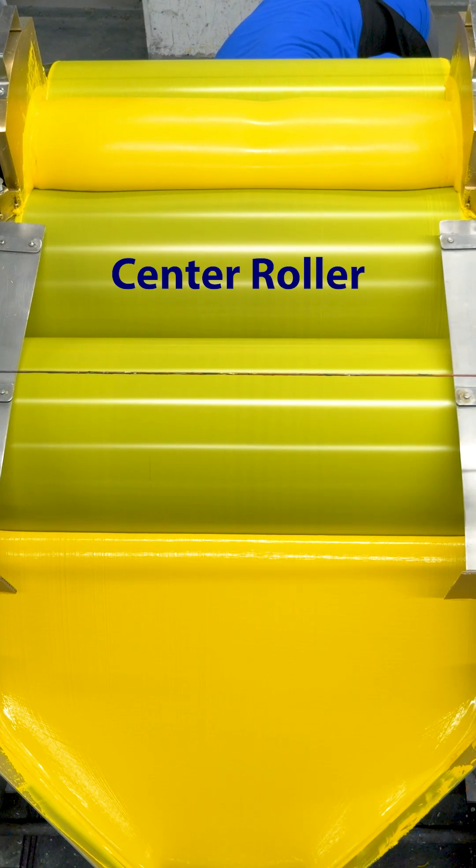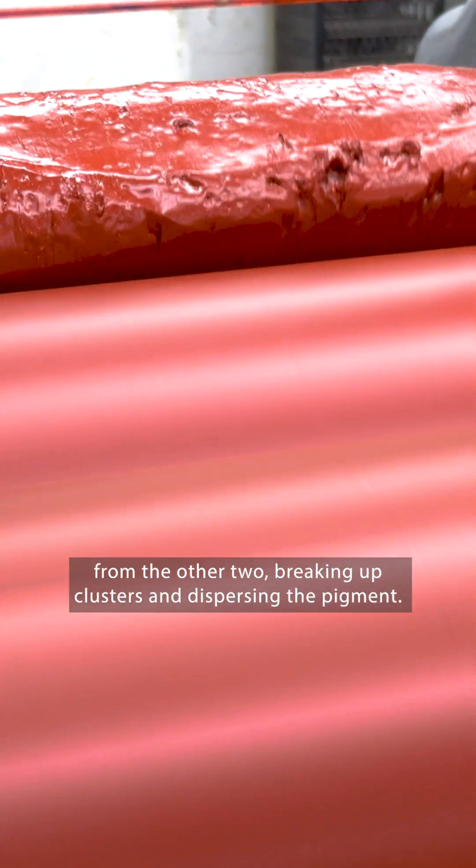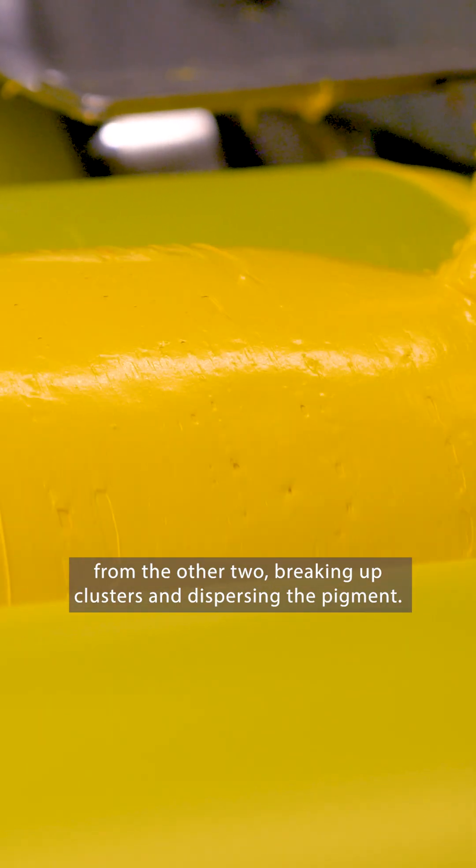Next is the center roller. It spins in the opposite direction from the other two, breaking up clusters and dispersing the pigment.